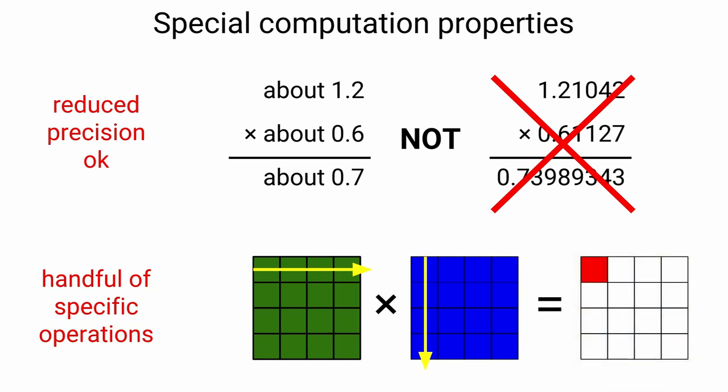Many deep learning models—those making transformations in speech, computer vision, and language processing—are really composed of a handful of specific operations and different ways of composing those operations. If you can do reduced-precision linear algebra operations—matrix multiplies, vector dot products—and do them at scale, that's a really flexible building block. It's not like you're specializing the hardware for a particular model; you're building a general-purpose, reusable linear algebra acceleration system. That can be really powerful for many of the deep learning models we want to train today and in the future.